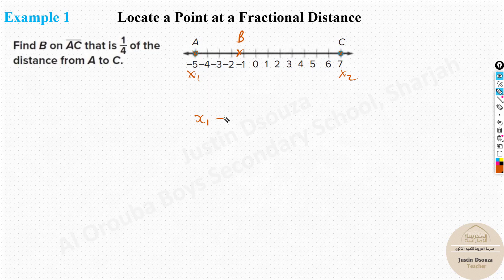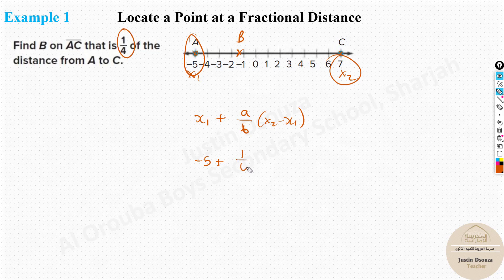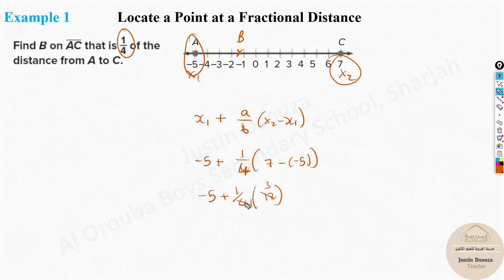Recalling the formula: x1 plus (a/b) times (x2 minus x1). Here, x1 is A which equals minus 5, and x2 is C which equals 7, and the fraction is one fourth. So we get: minus 5 plus (1/4) times (7 minus negative 5), which is minus 5 plus (1/4) times 12. That gives us minus 5 plus 3, which equals minus 2. So point B is at minus 2 on the number line.